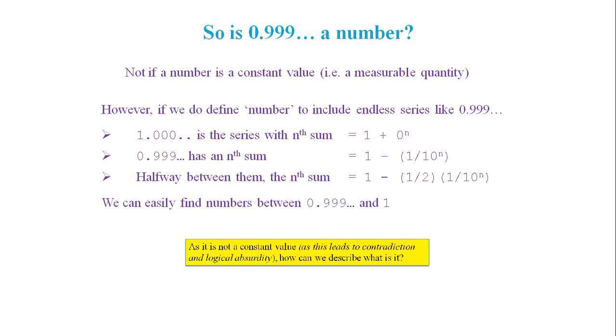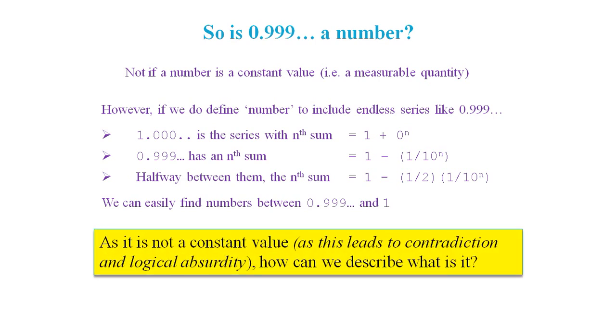That's all well and good, and we know that 0.9 recurring cannot be a constant. But then how can we describe what it really means?